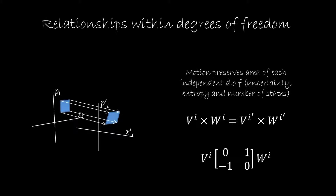To recap: within a degree of freedom, a small region is going to be mapped to another small region of the same area, which means the uncertainty, the entropy, and the number of cases within that degree of freedom are conserved. Preserving the area means preserving the vector product, because the vector product between two vectors gives us the area those two vectors form. So we call v_i the component of a vector v on degree of freedom i and w_i the component of vector w on degree of freedom i — we want this vector product to be conserved when we transport our vectors.